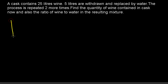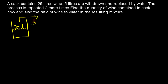There is a cask consisting of 25 details of wine. 5 details of wine are withdrawn and replaced by water. The process is repeated 2 more times, so in total it is done 3 times.